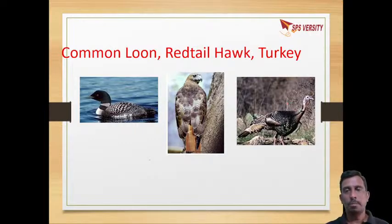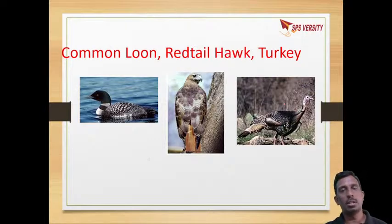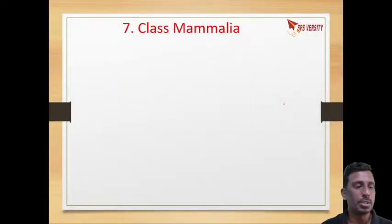Looking at the evolution of the heart: in Reptilia it is three-chambered; in Amphibia it is three-chambered; in Pisces (fishes) it is two-chambered; and in Aves and Mammals it is four-chambered. So if you look at the heart, the number of chambers gradually increases showing evolution.